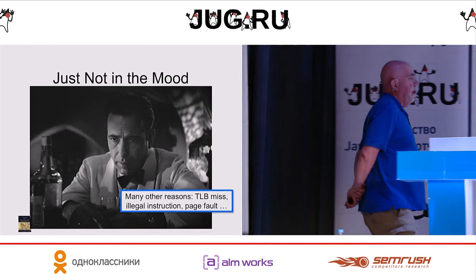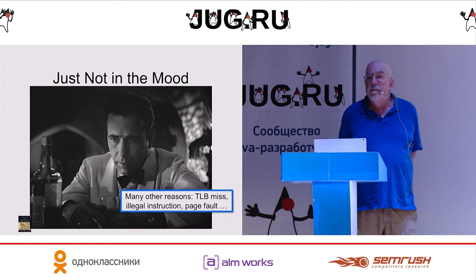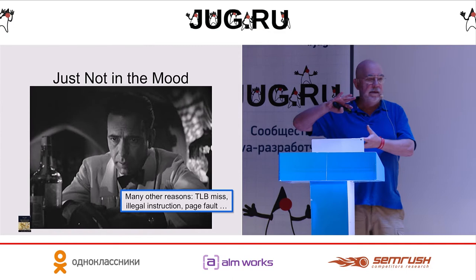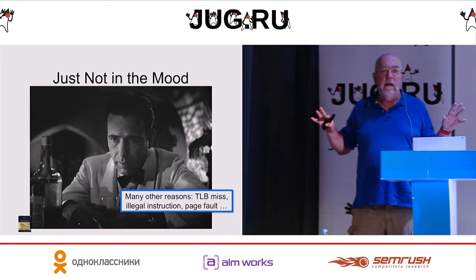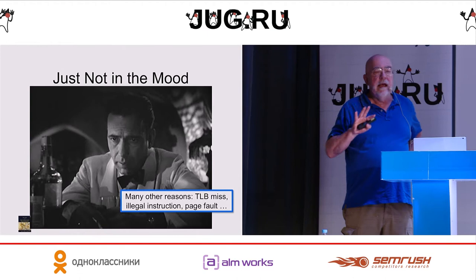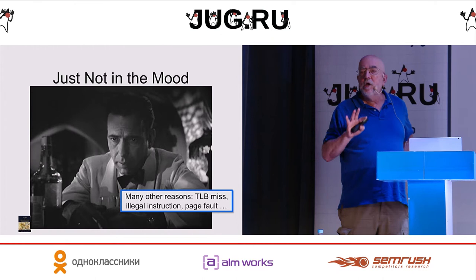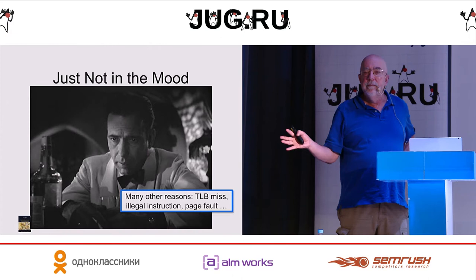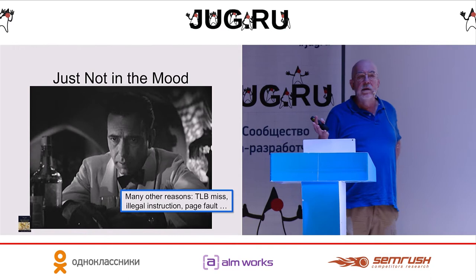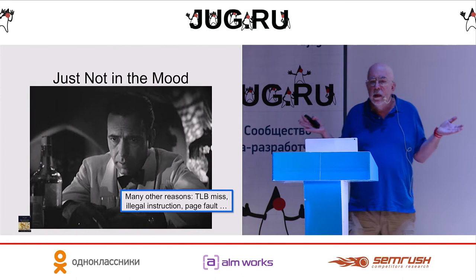It could be that you had a TLB miss, executed an illegal instruction, or had a page fault. There are all kinds of very complicated things that could happen. As a result, your software always has to be prepared for the possibility that your hardware transaction will never commit. So you always need to have some kind of a backup path. A sensible thing is you try it; if it fails, you try it again a few times. You look at the code and see whether this looks like a permanent failure or a transient problem.